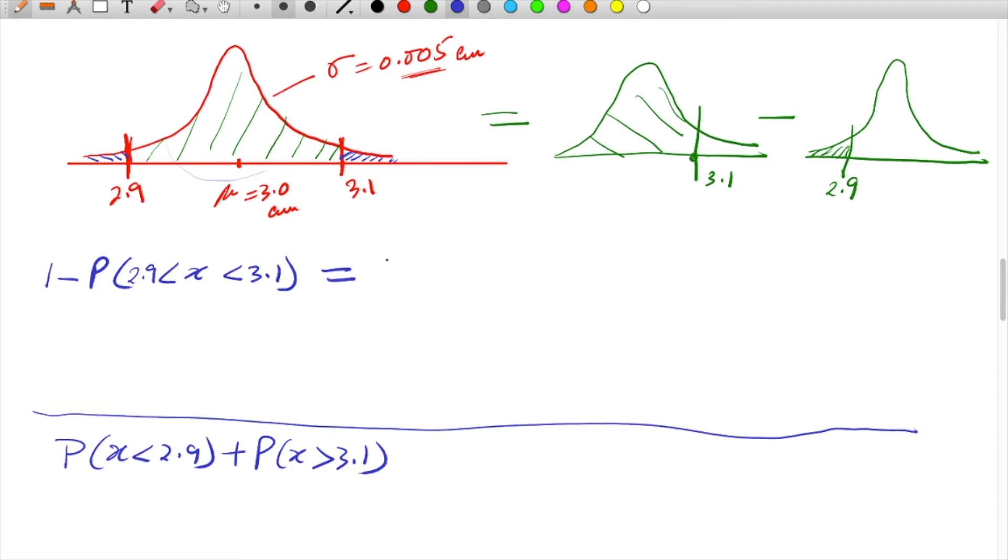If I take this approach, it will be 1 minus P(X < 3.1) minus P(X < 2.9). This minus this will give us the area within limits.